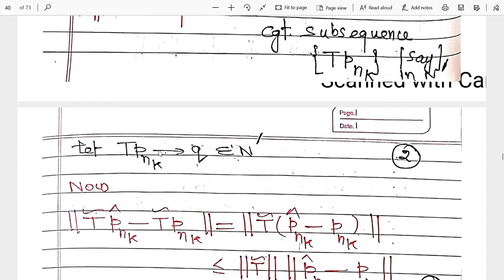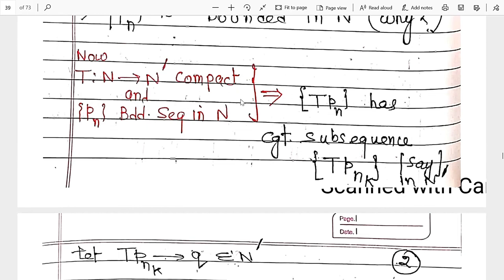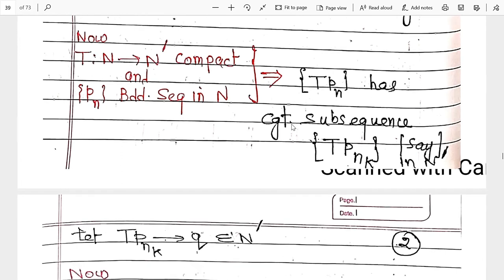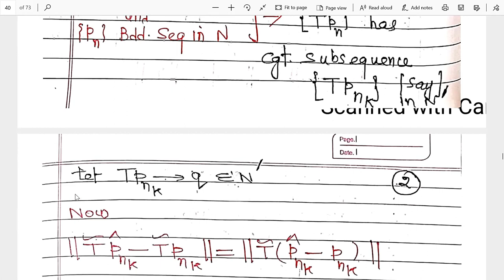Now the first part T-bar(p_{n_k}^hat) minus T(p_{n_k}) approaches zero — by the values from equation (3) and (2). And the second part T(p_{n_k}) minus Q also approaches zero — this is again from T(p_{n_k}) approaching Q. So both parts approach zero, therefore T-bar(p_{n_k}^hat) approaches zero as well.